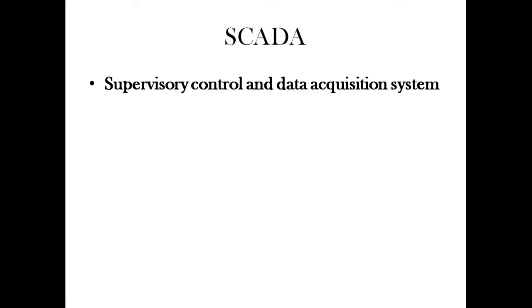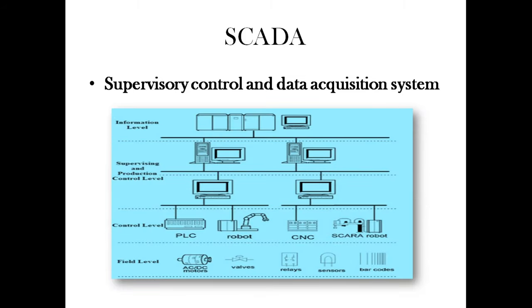Now let's see where SCADA is located in the industrial automation hierarchy. This hierarchy has various levels. We have the field level, control level, supervising and production control level, and the information level. From the bottom: field level is level 0, where all field instruments are located. The second is the control level, where all controllers including PLC are located. Above that, in level 2, we have SCADA. So SCADA is located at level 2 of the industrial automation hierarchy.